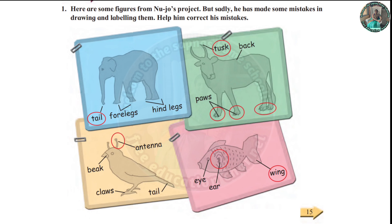This is the first question. Here are some figures from Nujo's project, but sadly he has made some mistakes in drawing and labeling them. Help him correct his mistakes.